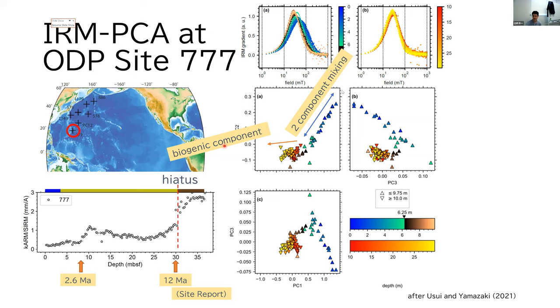suggests the mixing of two terrigenous components because biogenic component is somewhere here. Unlike ARM susceptibility, we expect distinct IRM acquisition curves for all different terrigenous components.